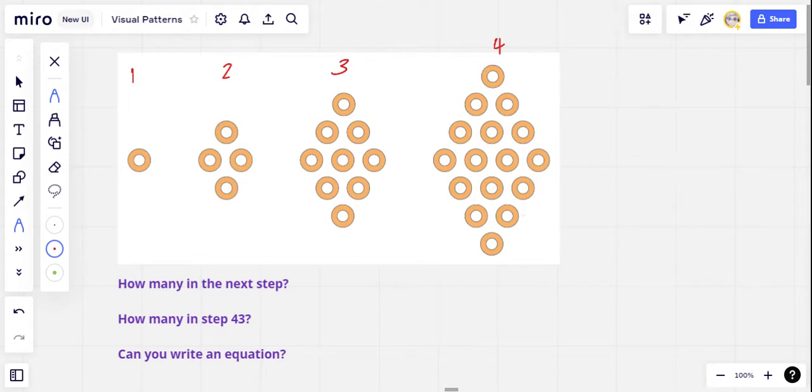Your challenge, if you choose to accept it, is to use your intuition about this to predict how many of these cheerios or spaghetti loops in step five, and if you can, how many in step 43. And can you write an equation along the way that you could use to predict the number of spaghetti loops in any step at all? If you'd like to try that, let's pause the video and see how you do.